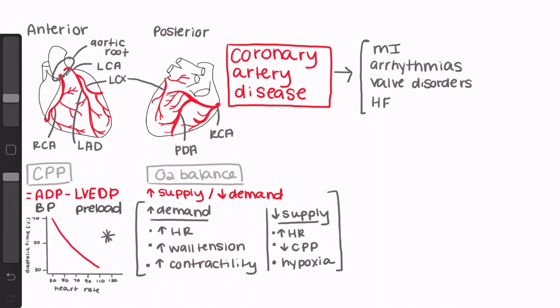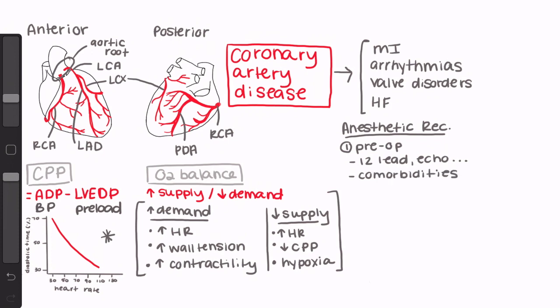Patients with coronary artery disease are at risk for intraoperative ischemia, and that's obviously something we want to avoid. So here are some recommendations to keep in mind. First, make sure you're doing a really thorough pre-op assessment and preparing accordingly. Take a look at your patient's 12-lead ECG and their echos and any other diagnostics they've had done. Also make sure you're aware of any resulting disease processes they may also have, like arrhythmias, diastolic dysfunction, myocardial infarction, or heart failure.